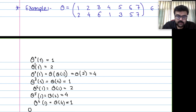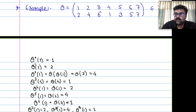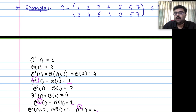As we go on, theta^7(1) = 2 again, theta^8(1) = 4, theta^9(1) = 1. So theta^3, theta^6, theta^9 all give back 1. These are all 1. The smallest positive integer for which theta^L(1) = 1 is L = 3.